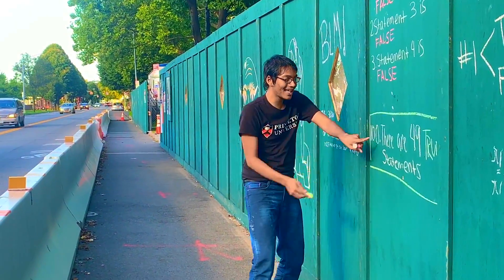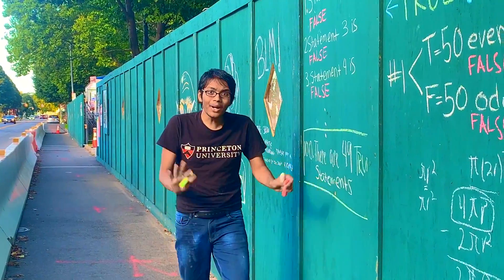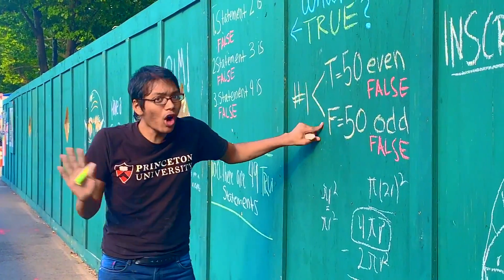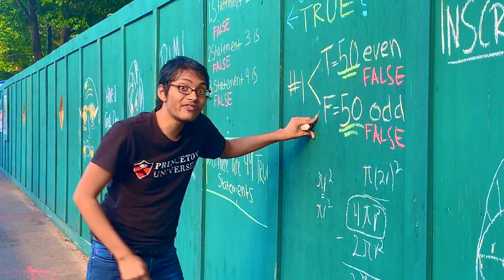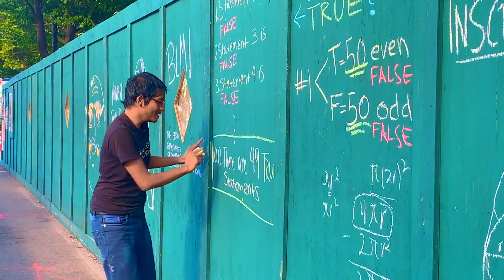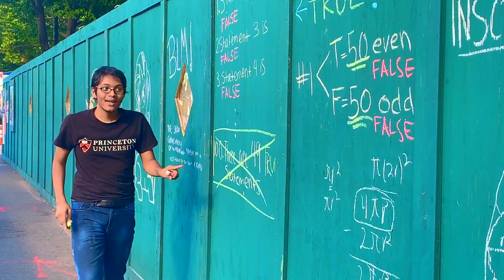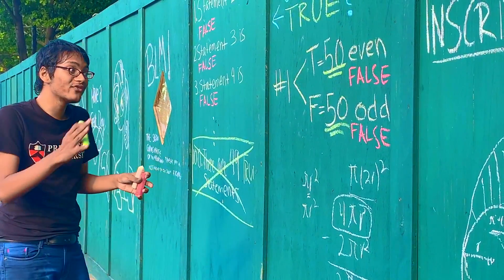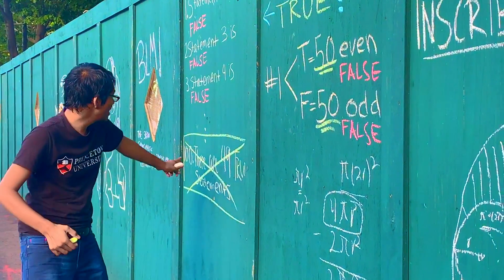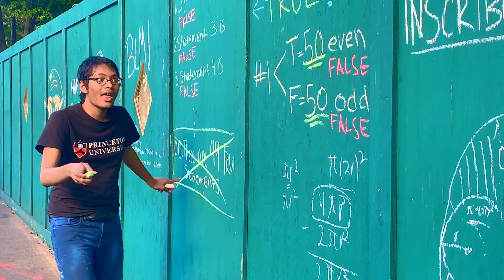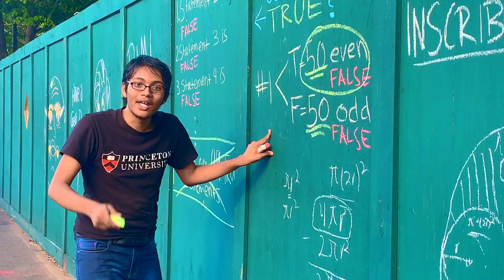Here's where the kicker comes in. Look at statement number 100 — that's your major clue. It says there are 49 true statements. But whether statement one is true or false, we know there has to be exactly 50 true statements. That means statement number 100 is false. And since statement 100 is an even number, it falls under the even-false category.